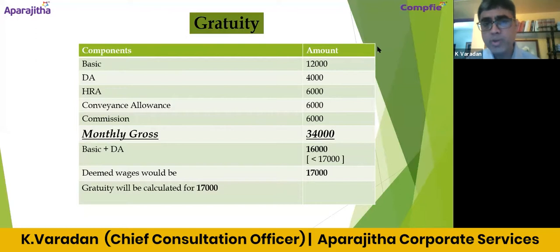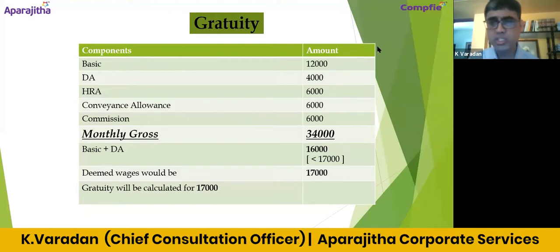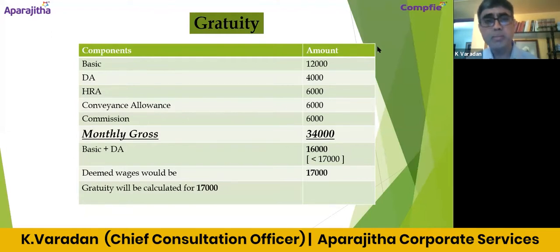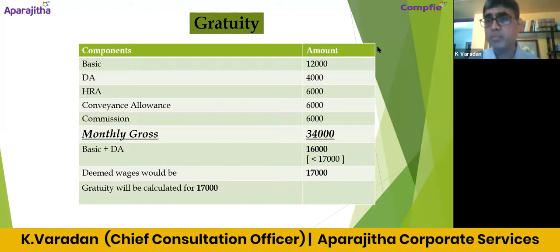Now we will calculate Gratuity on Basic and DA alone — 16,000. That is not questioned by any authority. But as per the new definition, at least 50% should be the wages. So the deemed wages would be 17,000.